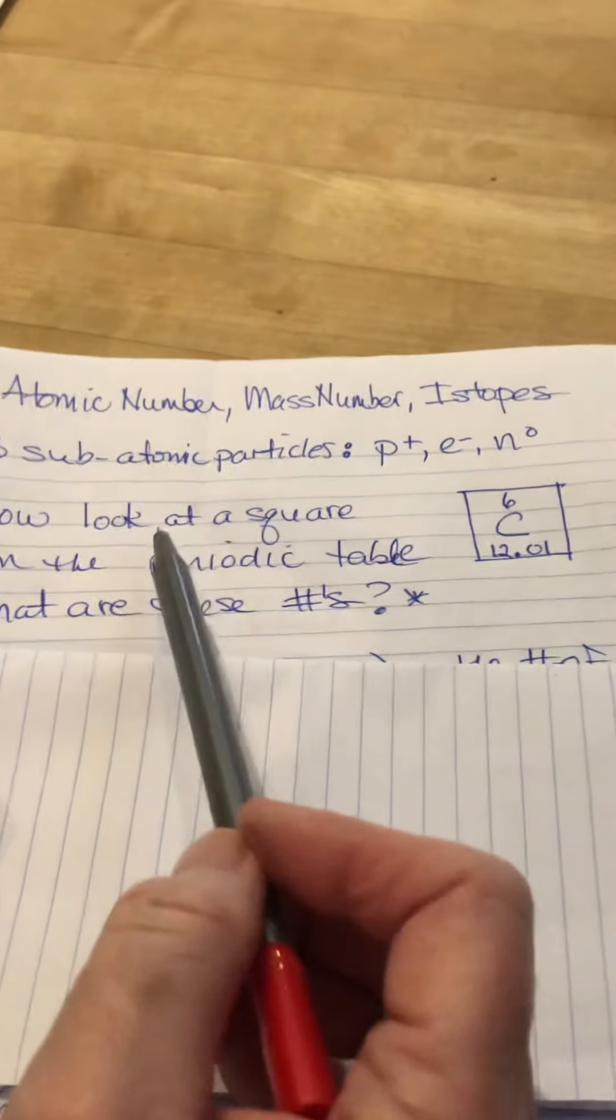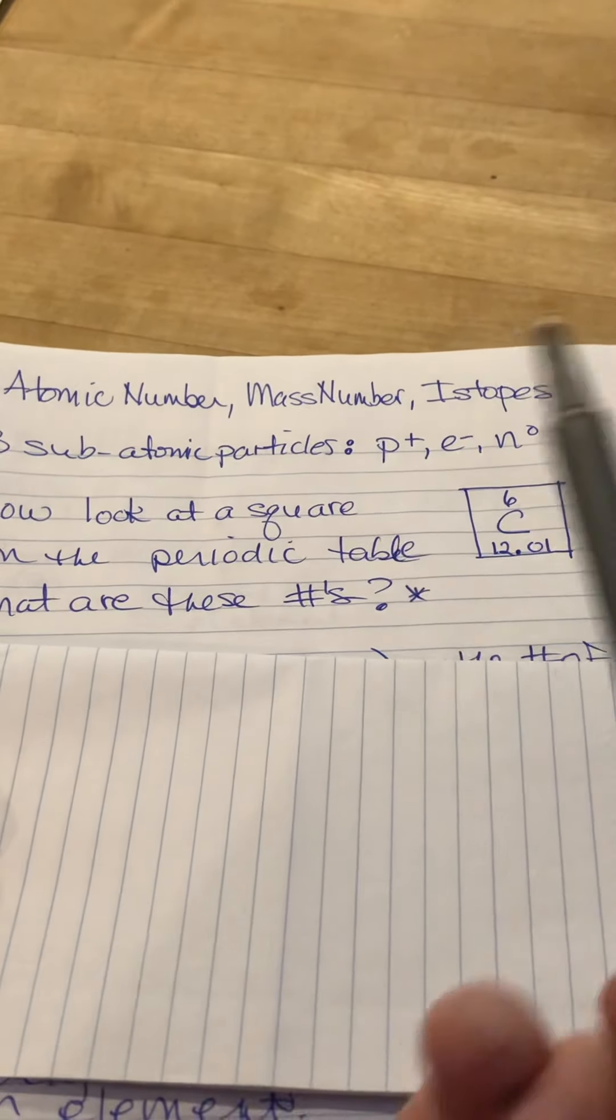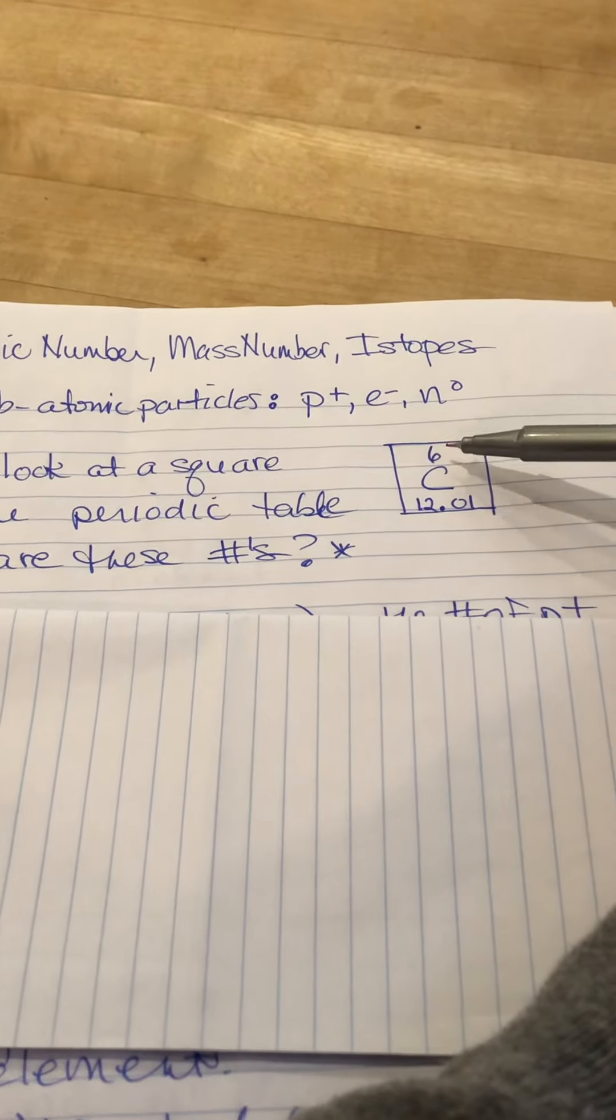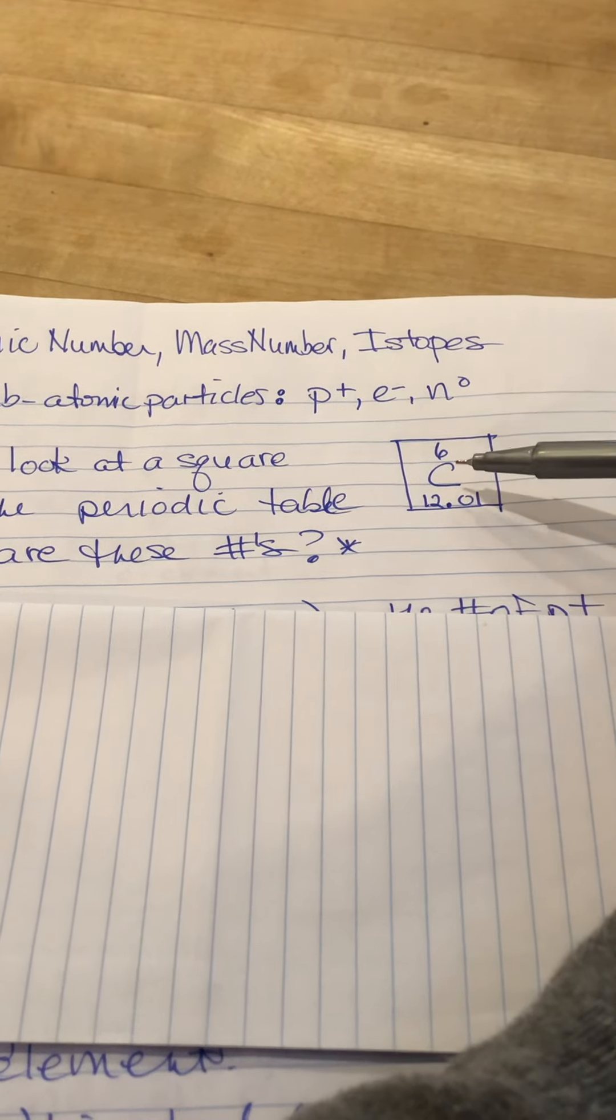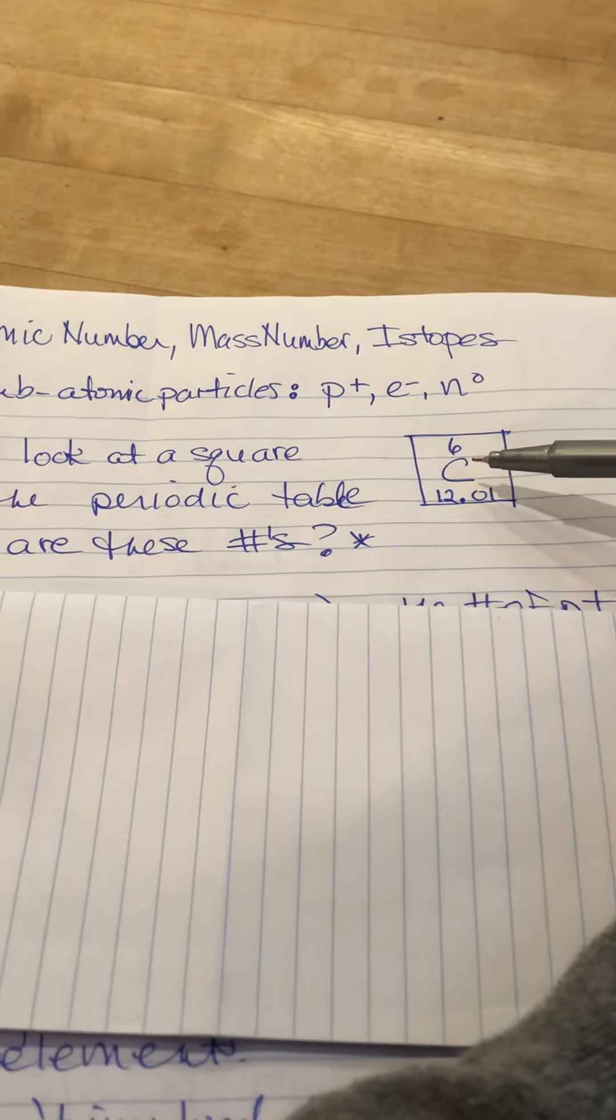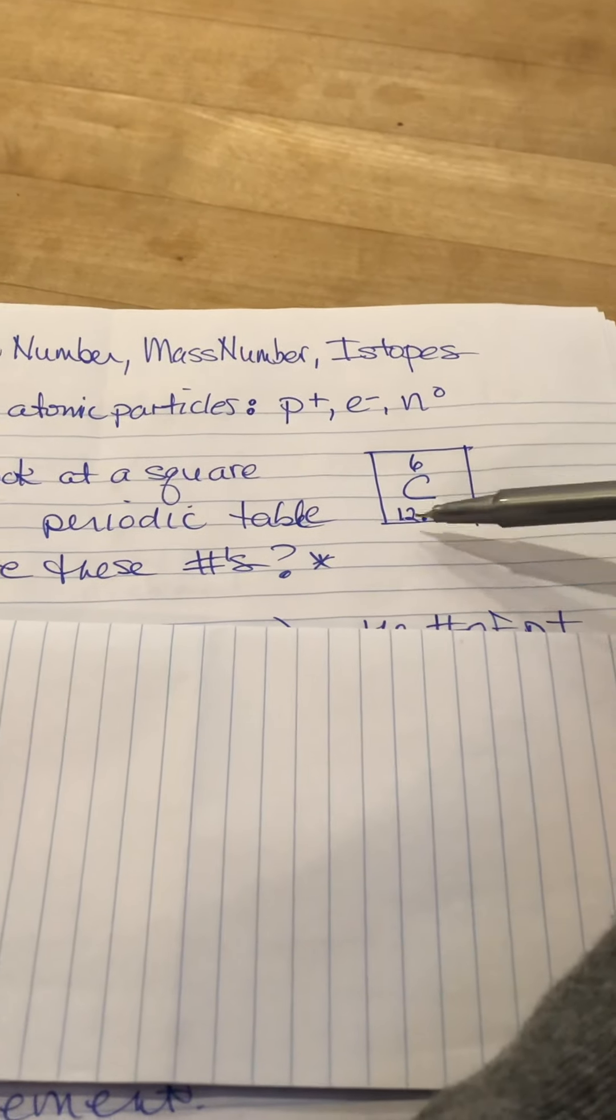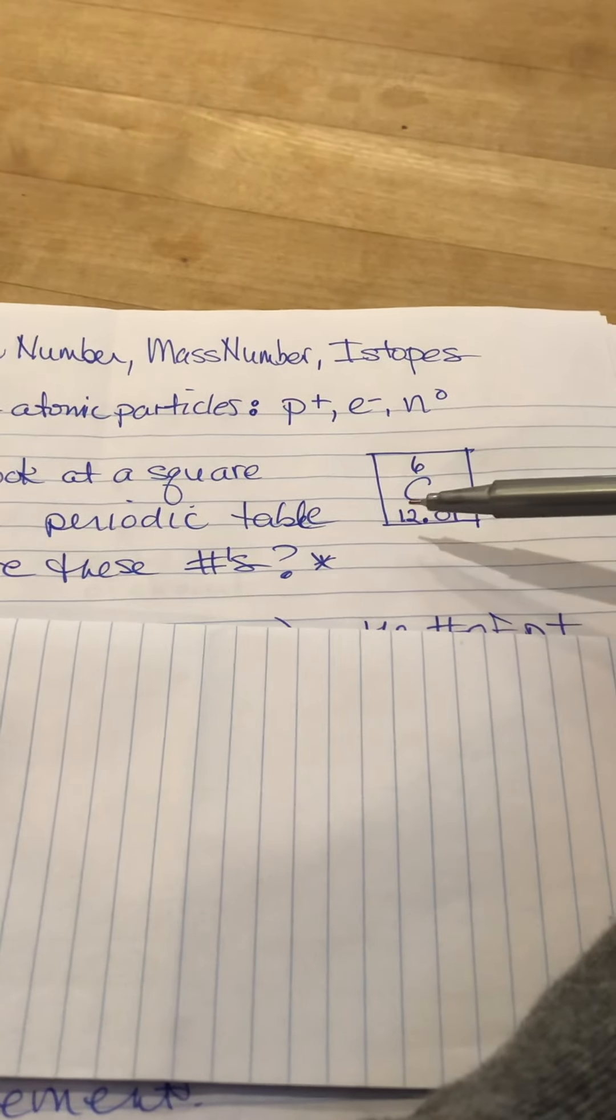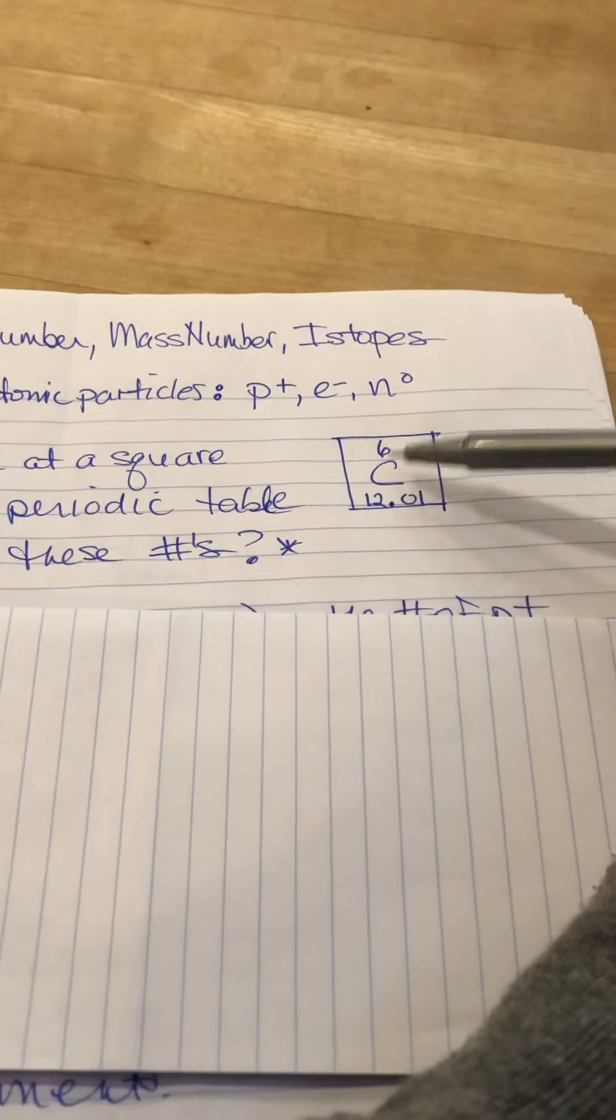If we look at a square on the periodic table, you're at least going to see these three things: an integer, the symbol for the element (you may see its name, but at least the symbol), and this non-integer number. You may see other things, but at least those three.